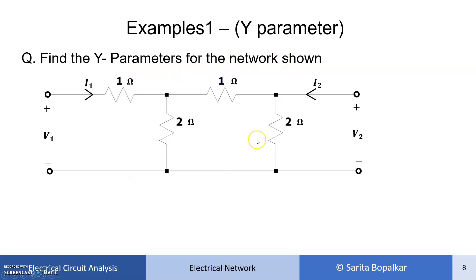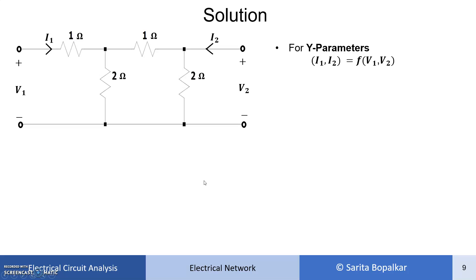Here I have considered the same two-port network which we have taken for the Z parameter. Now, for Y parameter, we know that I1 and I2 are expressed as a function of V1 and V2. These are the standard equations for Y parameter.